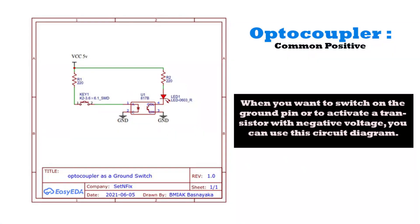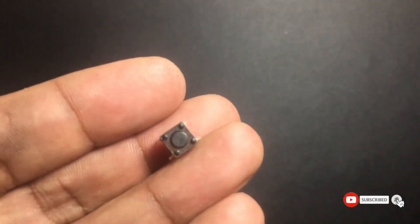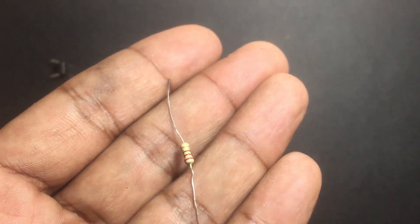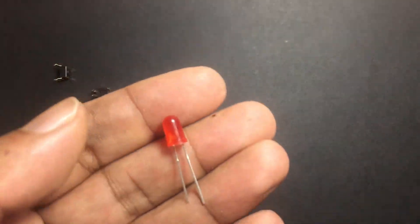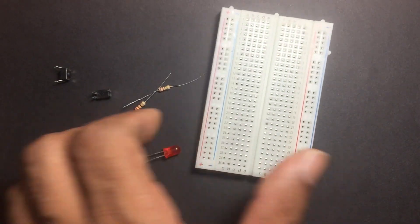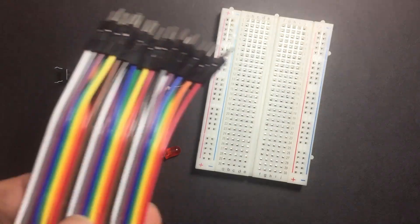First check the circuit diagram. It is a simple circuit. You have to find the following parts: one tact switch, an optocoupler, two numbers of 220 ohm resistors, one LED bulb, one project board and jumper cables.